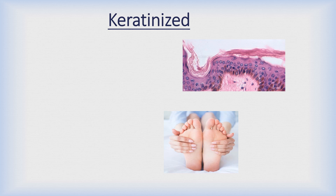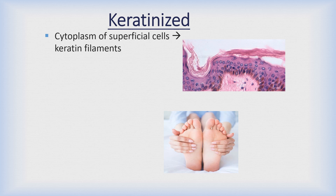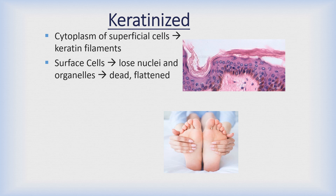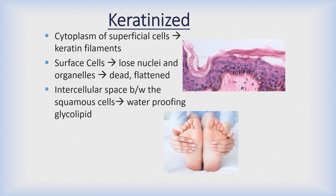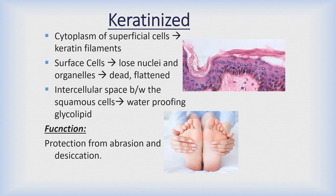The first variety of stratified squamous epithelium is keratinized epithelium. The cytoplasm of the superficial cells contains keratin elements. Keratin is a kind of protein which fills the superficial cells. These surface cells which are filled with keratin lose their nuclei and become dead and flattened. The intercellular space between these keratin-filled cells contains waterproofing glycolipid. This type of epithelium is present on surfaces which need protection from abrasion and desiccation. The epidermis of the entire body surface is included in its example.